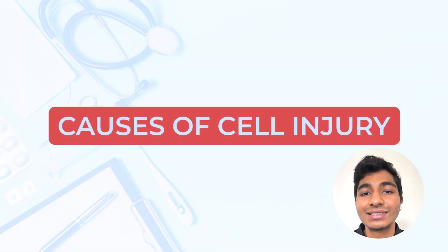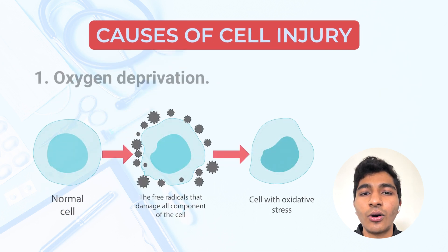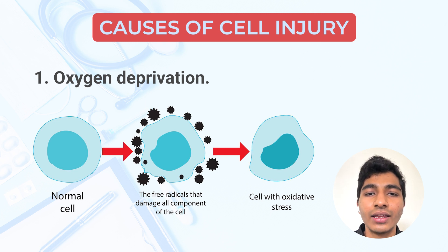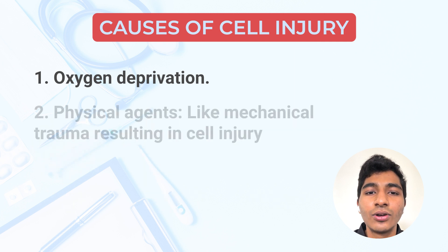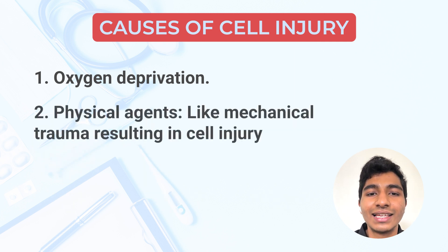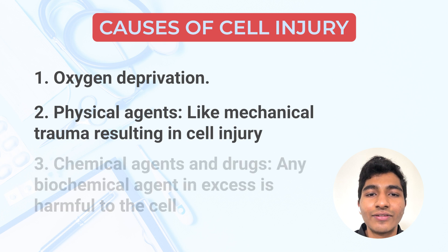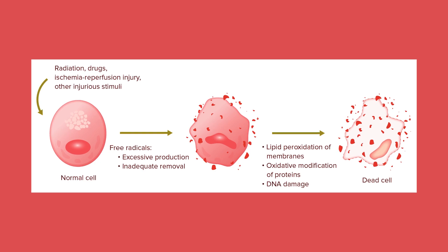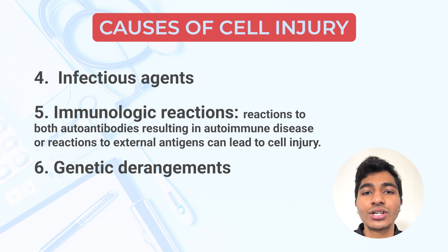Now after we have discussed the types of cell injury, let us look at a few causes. First, obviously oxygen — if there is oxygen deprivation, the cell won't be able to make energy, won't be able to metabolize, and therefore will die or get injured. Next are a few physical agents such as trauma, chemical agents such as arsenic and mercury, infectious agents such as bacteria, immunological reactions as in necrosis where there is an immunological reaction once the proteins and contents leak to the plasma membrane, and genetic derangements.